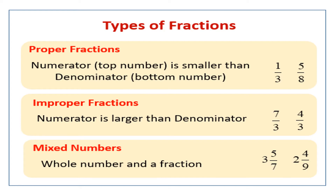The third type is mixed fractions or mixed numbers, where a fraction is made up of a whole number and a proper fraction — that is called a mixed fraction. You get a whole number and a fraction together. For example, three and five upon seven: three is your whole number and five upon seven is written in fractional form. Same way, two and four upon nine — this is the way we write a mixed fraction.